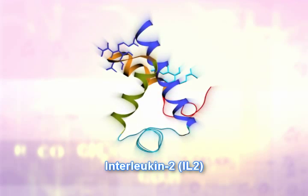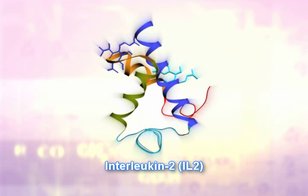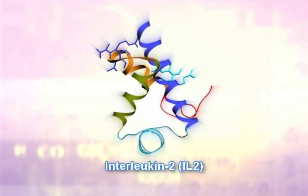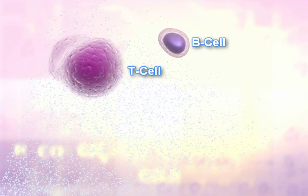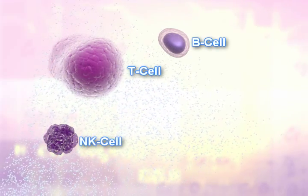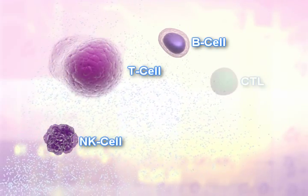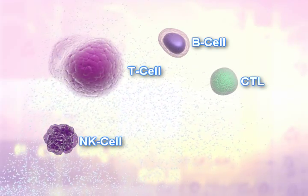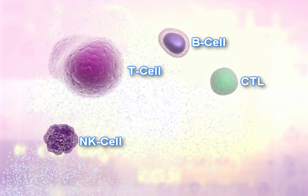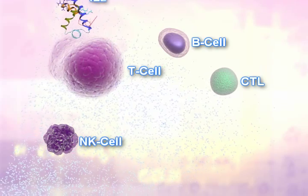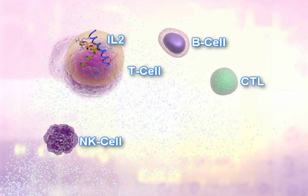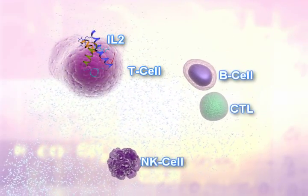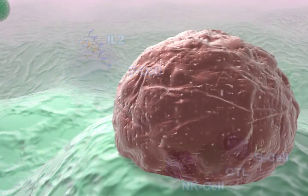IL-2 is a protein that occurs naturally in the body and plays an important role in activating and increasing the number of T cells. IL-2 therapy possesses the same properties as naturally occurring IL-2 and helps to increase T cell activation and synthesis of B cells, natural killer or NK cells, and cytotoxic T lymphocytes, all of which are critical to immune system function. Once activated, helper T cells secrete cytokines such as tumor necrosis factor, or TNF, and interferon gamma, which both have antitumor effects. Cytotoxic T lymphocytes and NK cells directly kill tumor cells.